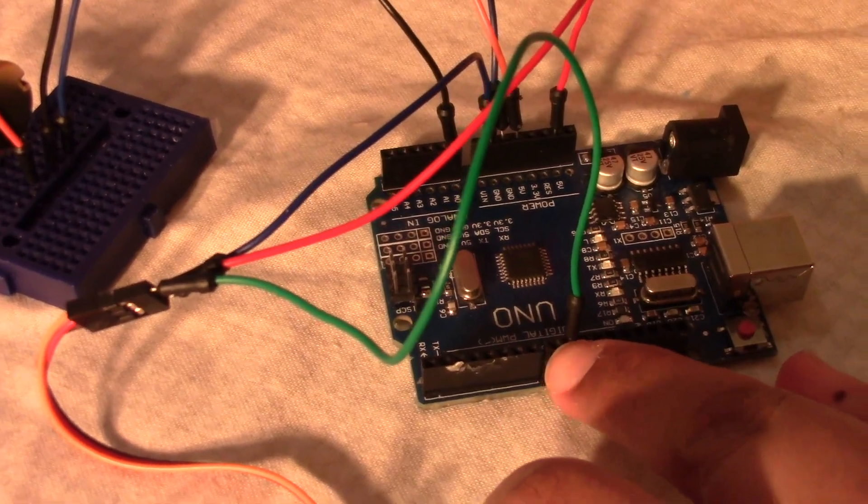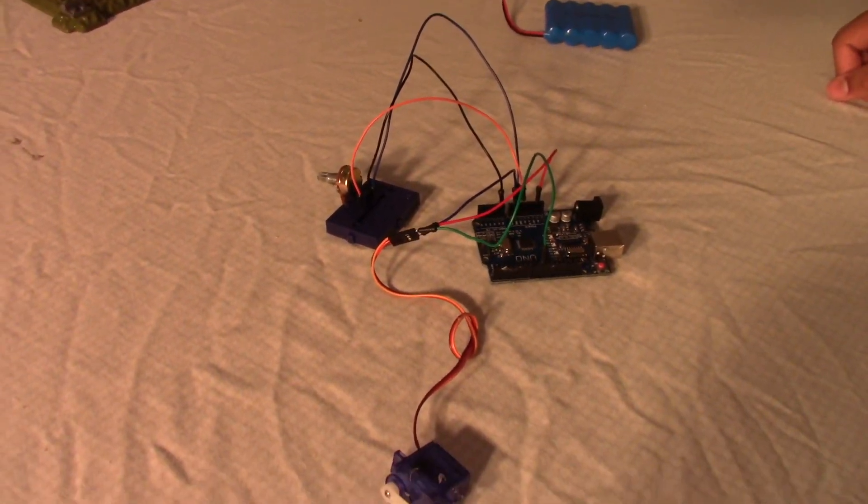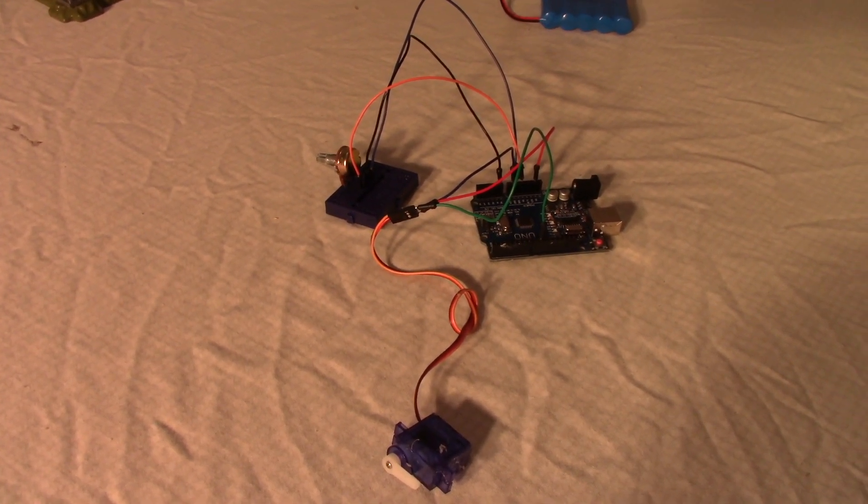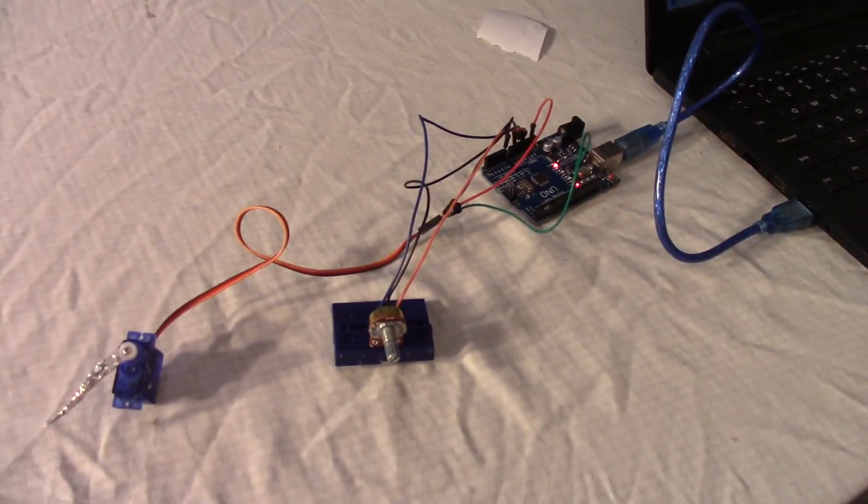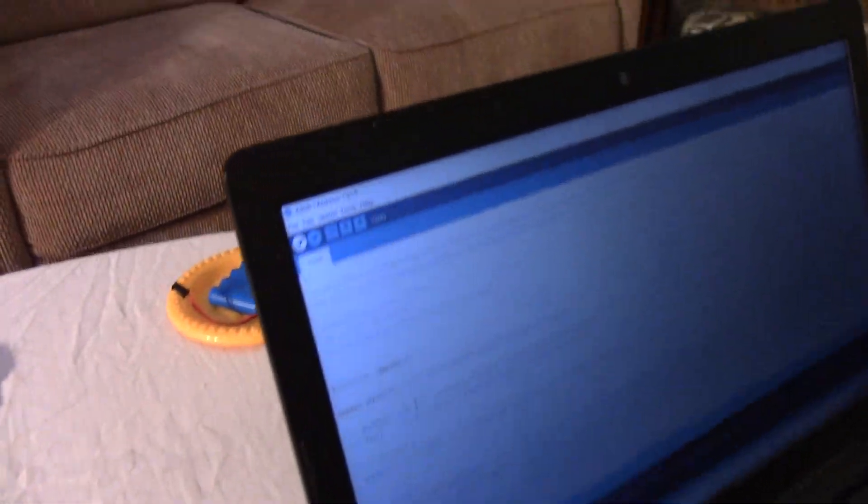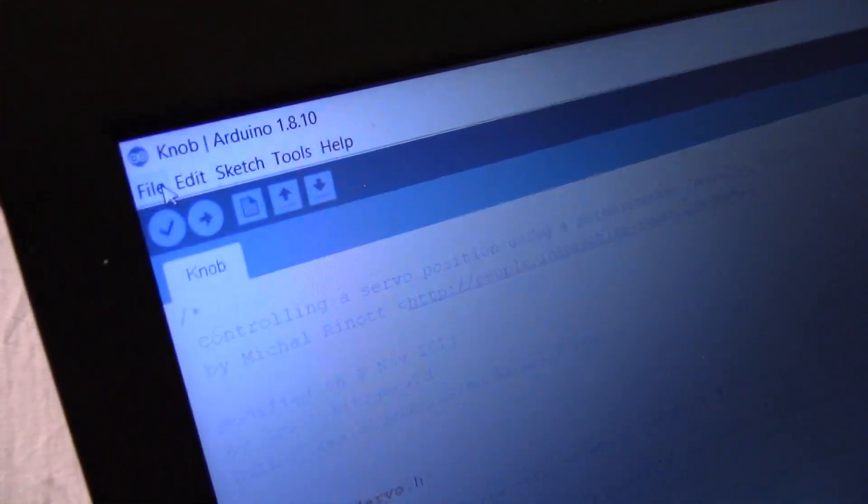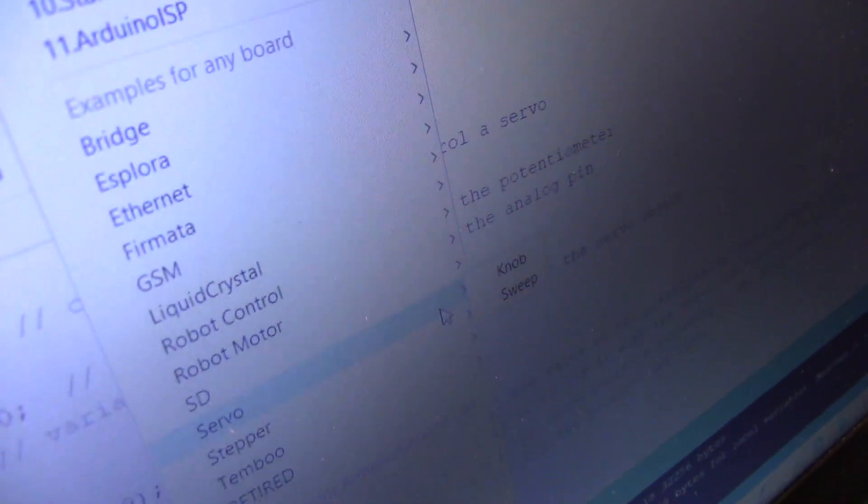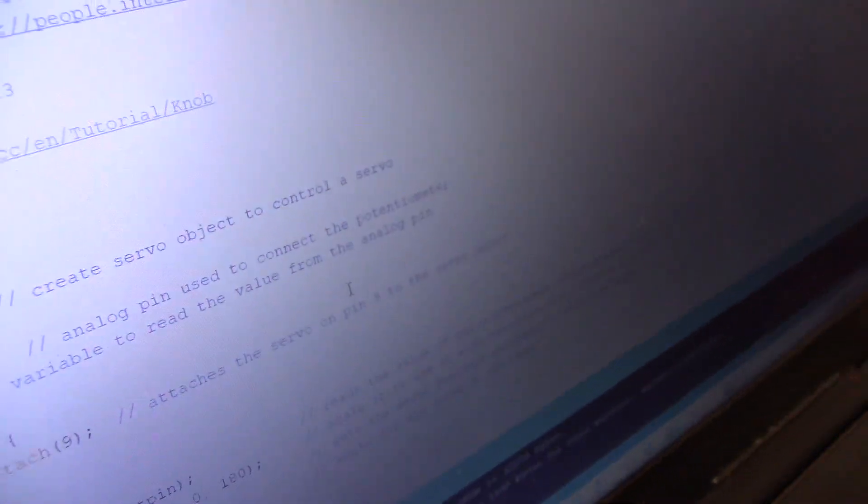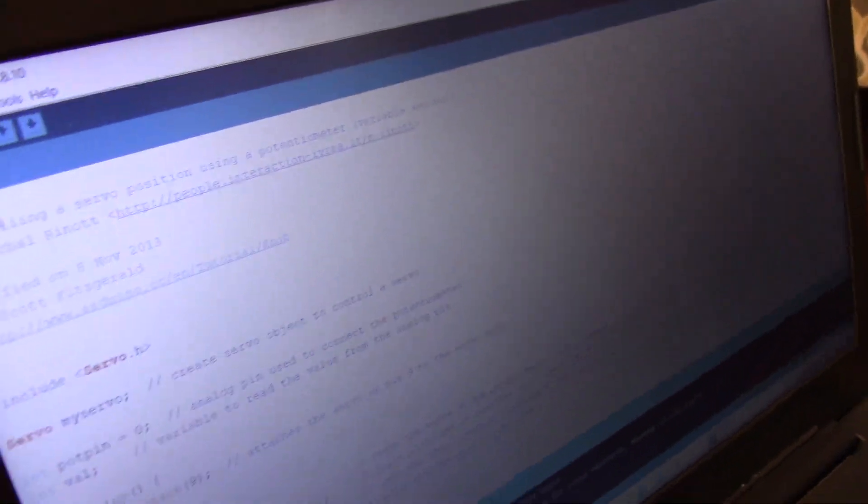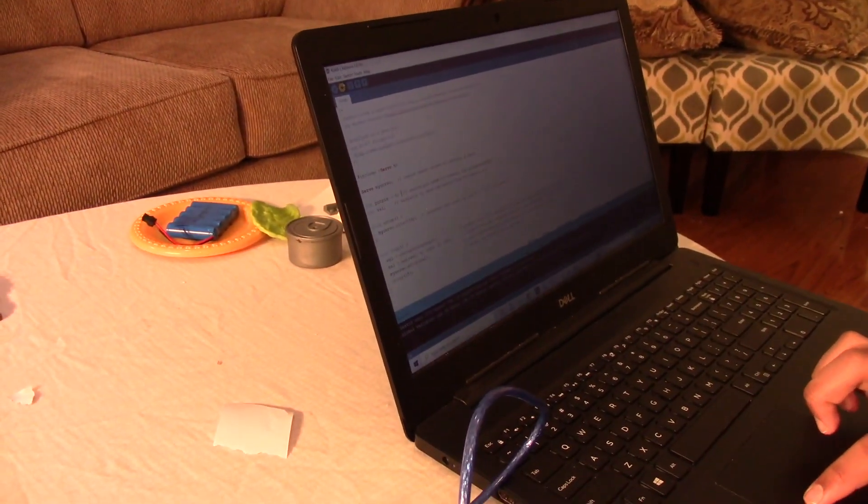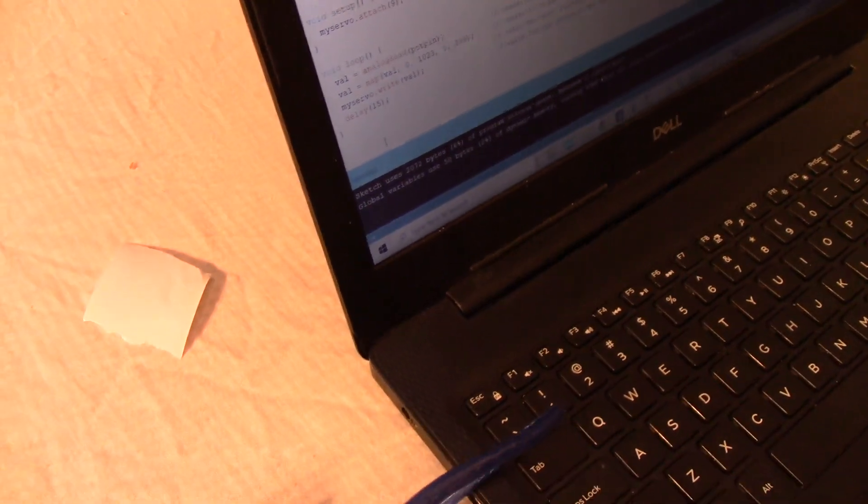Now that's all the wiring for this experiment. Now all we have to do is upload the code and I'll show you guys how to upload the code. The code will be in the description, but here's the easier way: you go to File, and you go down all the way to Examples. You come here and you see Servo, and you go to Knob. Click it, and then this should come up and it'll be titled Knob right here. Now you click Upload. It should turn yellow down here, showing that it's uploading, and it'll say Done Uploading when it's done.